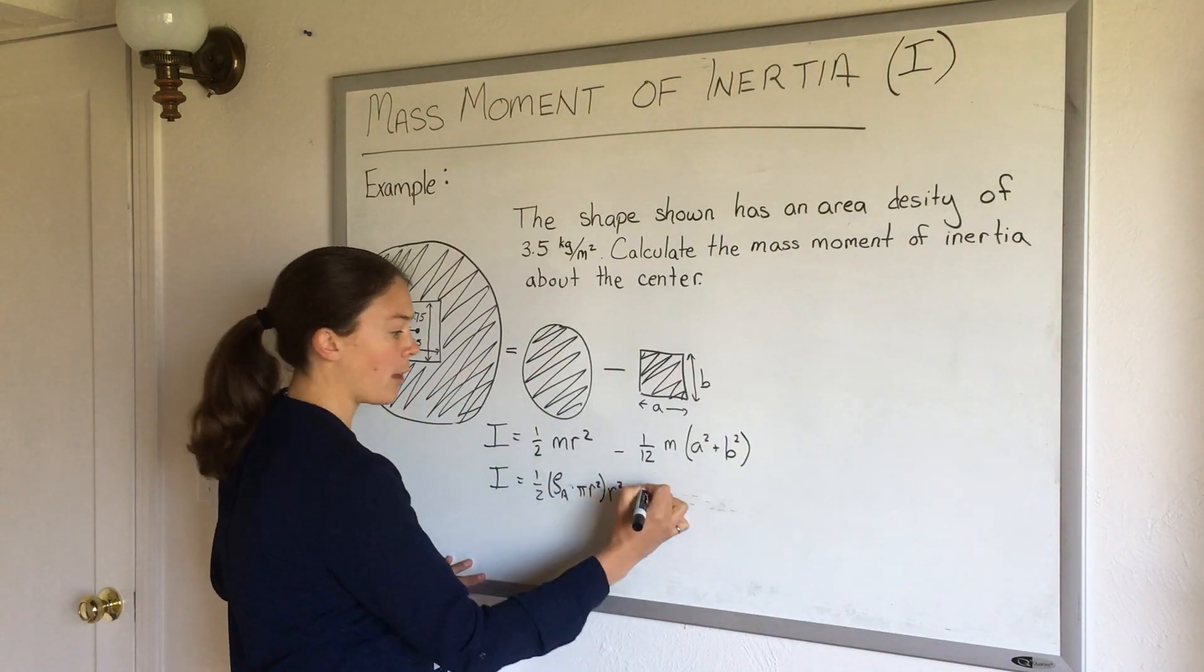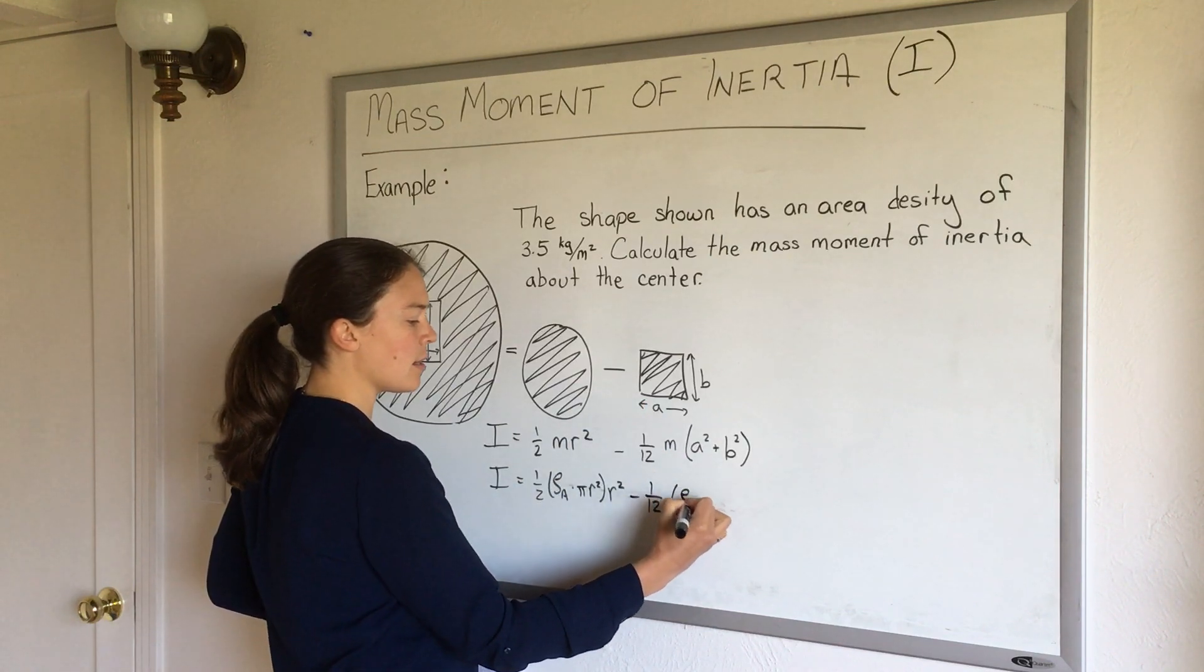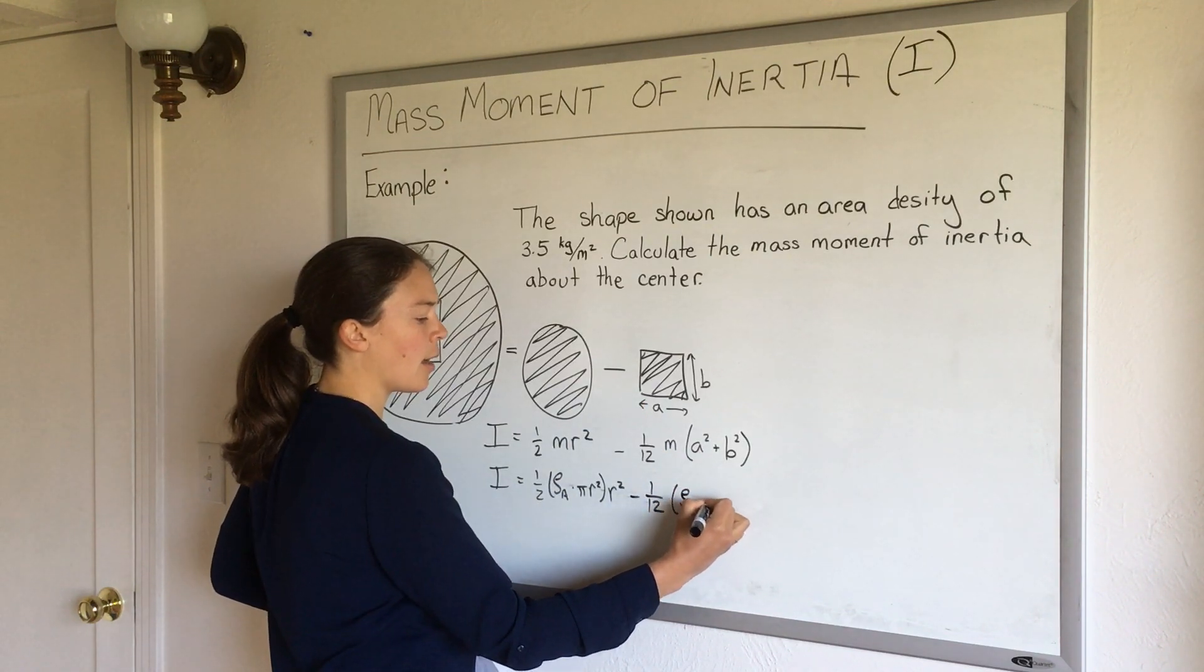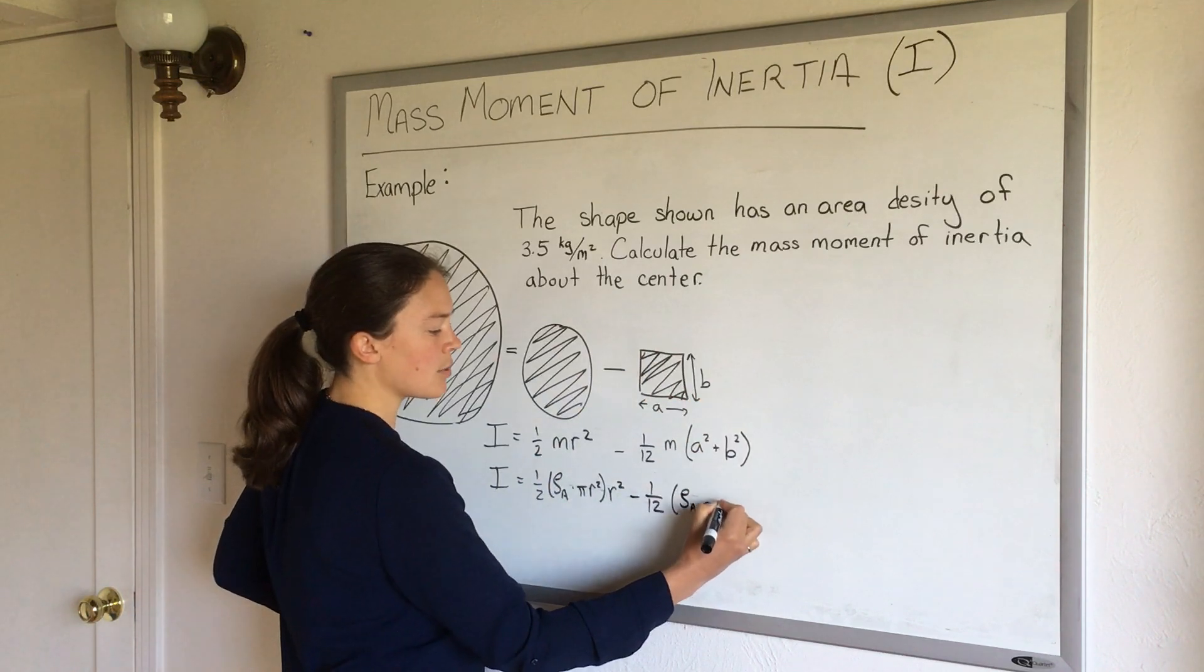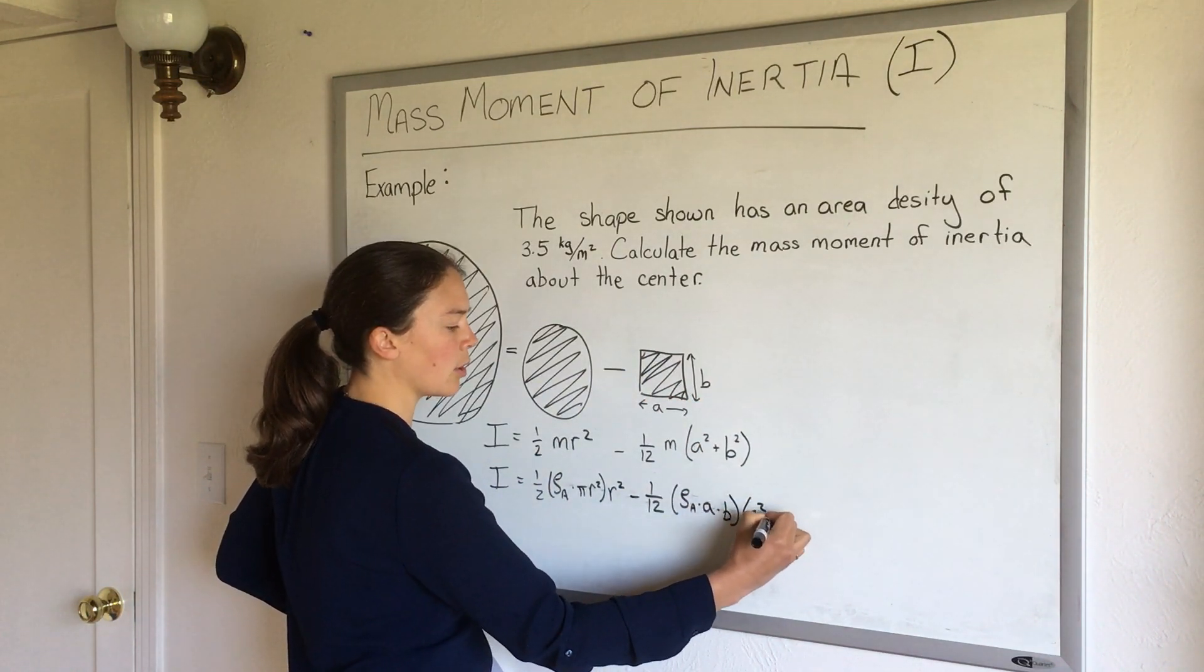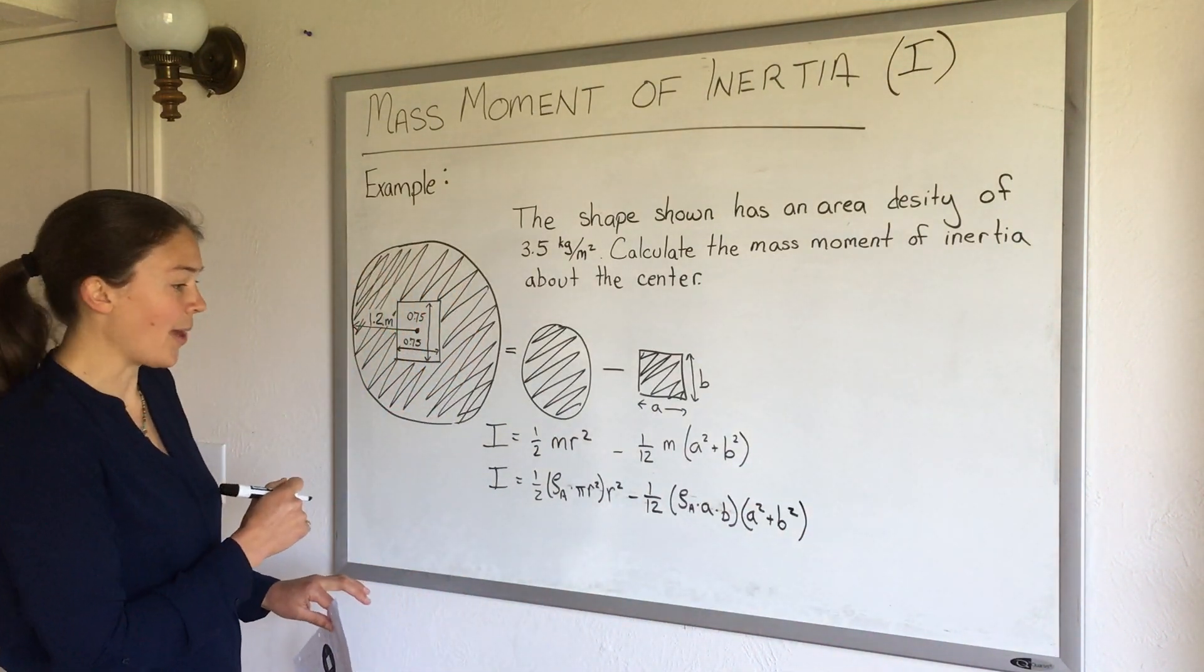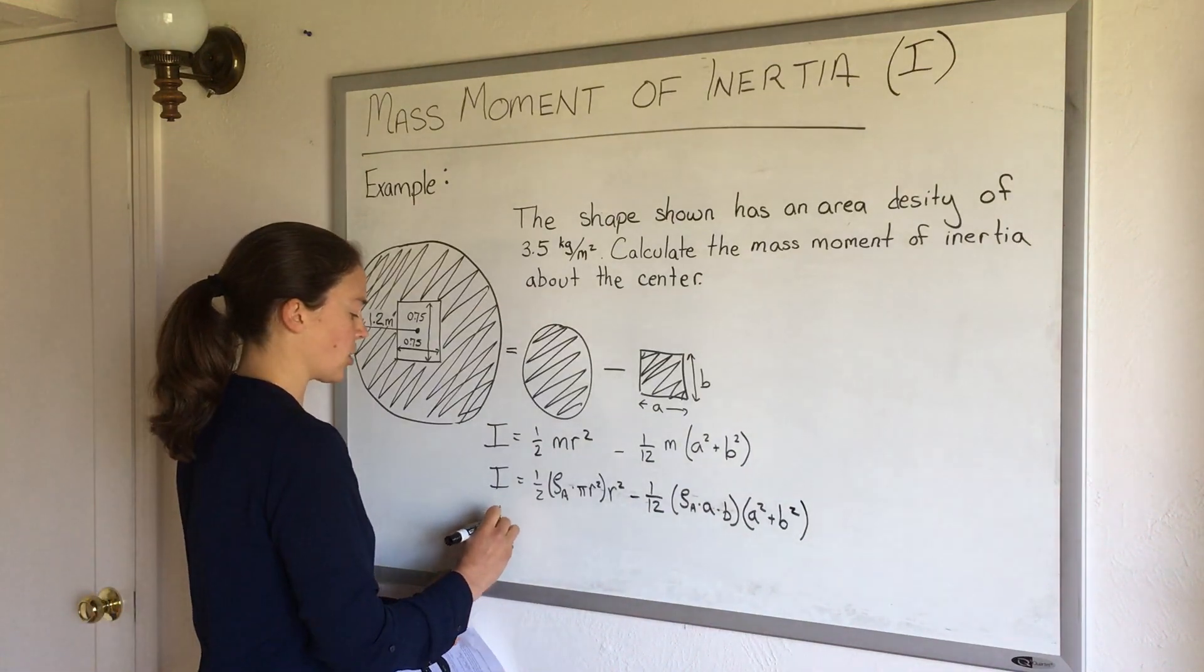So subtracting out that part, here we go, 1/12. The mass of this square will be the density, the area density, times the a times the b, which are the same in this case, and then it'll be a squared plus b squared. So these are all definitely terms that I know now, so I'm gonna go ahead and plug it in and solve.